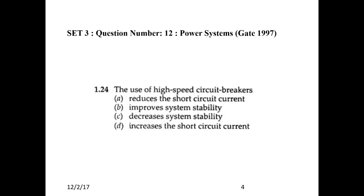Next question: The use of high speed circuit breakers. The purpose of a circuit breaker is to trip when a fault is identified by the relay — it gives a trip signal and the breaker isolates the faulty system from the healthy system. Short circuit current is not reduced by the circuit breaker's operation, so choices A and D are wrong. Since a high speed circuit breaker isolates at a faster rate, the system stability will be improved. Choice B is correct.